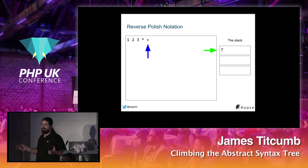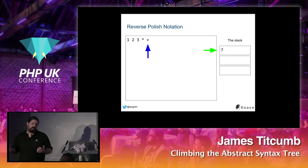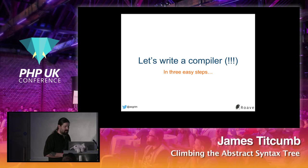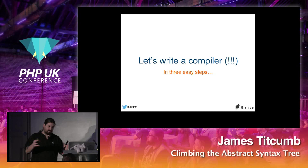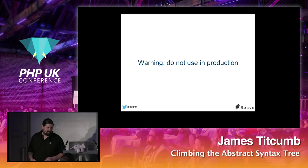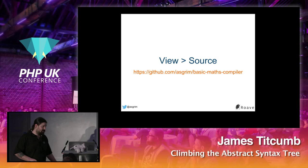Armed with this knowledge, we can write a very simple compiler using an AST. Don't use it in production though — it's terrible. The source code is on GitHub at github.com/asgrim/basic-maths-compiler. Our language will just be basic sums — only positive integers, whitespace ignored, four operators (add, subtract, multiply, divide), only one line of input, and no bracket overrides for order of precedence.